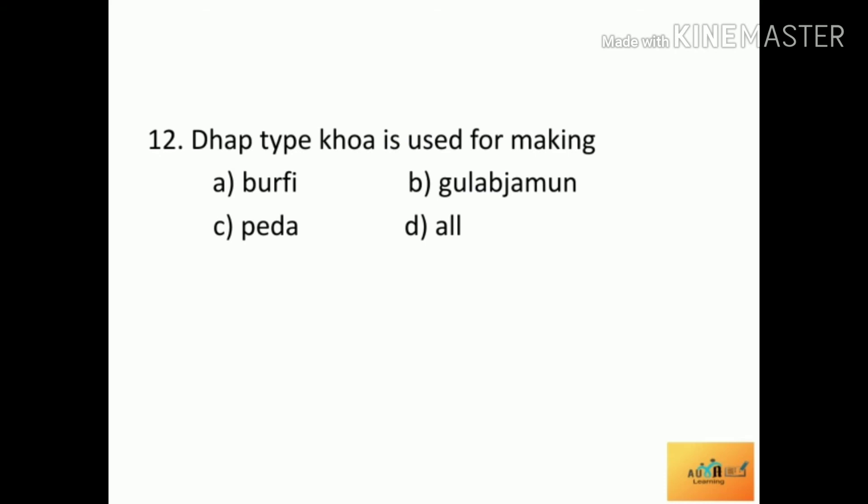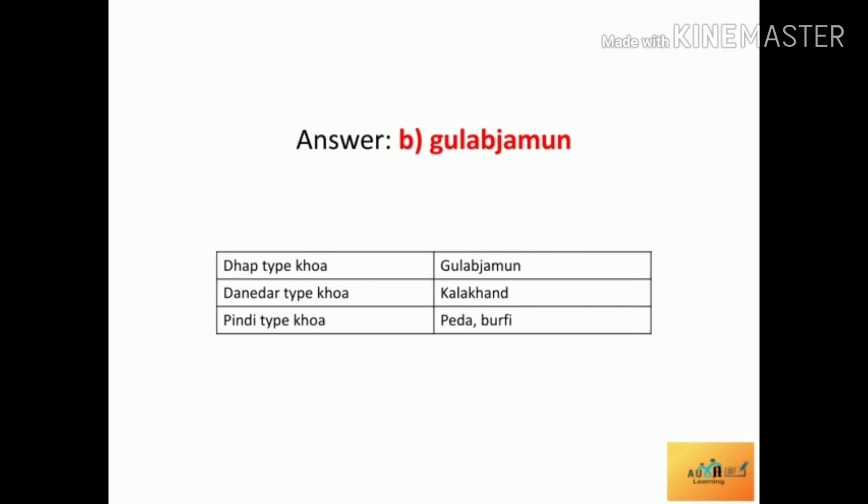Next question: Khoya is used for making — Option A: barfi, Option B: gulab jamun, Option C: peda, Option D: all. The correct answer is gulab jamun. Khoya or mawa is classified into three types: dab type, daanedaar type, and pindi type. Gulab jamun is prepared from dab type khoya. Kalakand is prepared from daanedaar type, and peda or barfi is prepared from pindi type khoya.